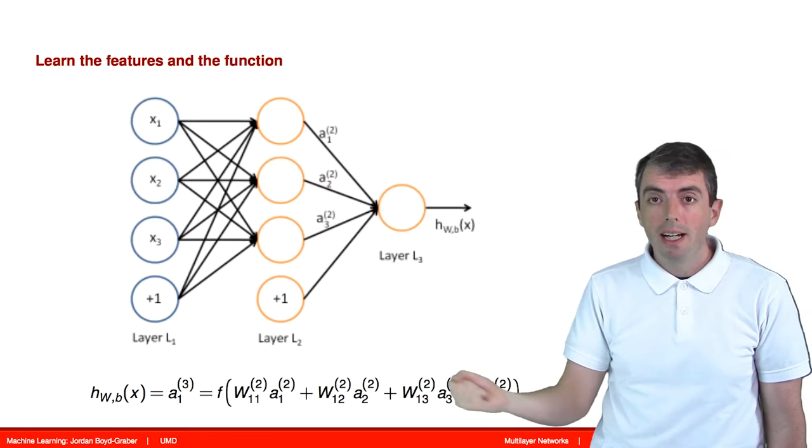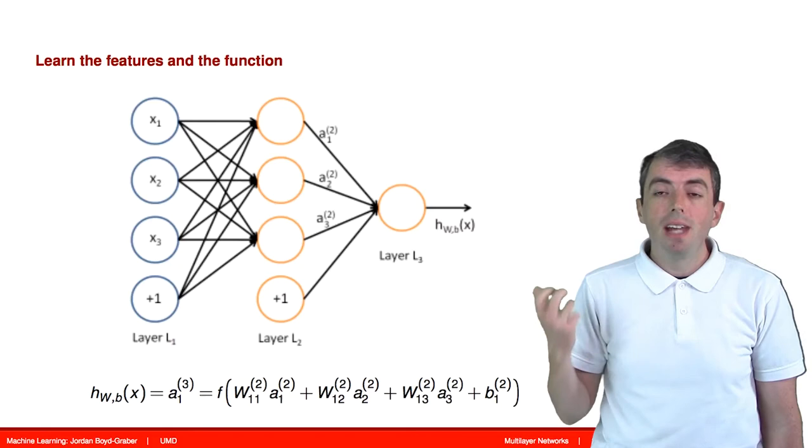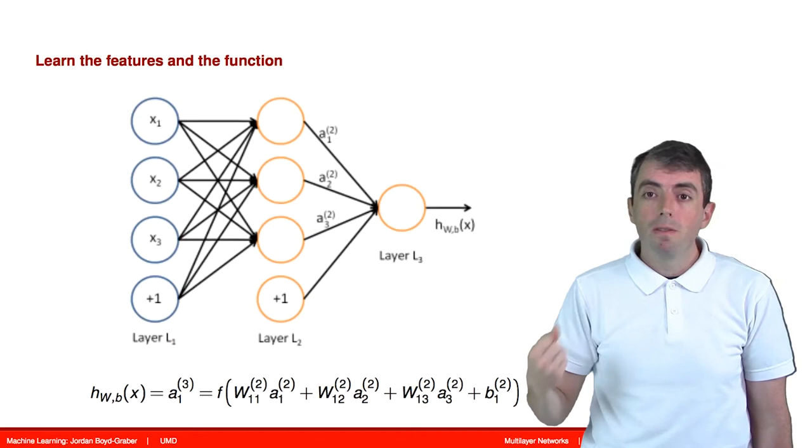You take the result of those hidden nodes, multiply them by some feature vector specific to the output layer, add in a bias term specific to the output layer, and then pass that through an activation function.